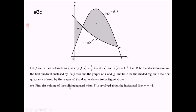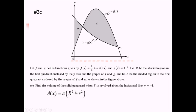For the last part of this problem, they want the volume of the solid generated when S is revolved around the horizontal line y equals negative 1. I'm going to draw a horizontal line down below the x-axis to get a good visual of what's going on. Our limits of integration are just going to be A to 1, the same as when we found the area of S. Since I've got a gap between the bounded area and my axis of revolution, I'm going to have to use the washer formula.